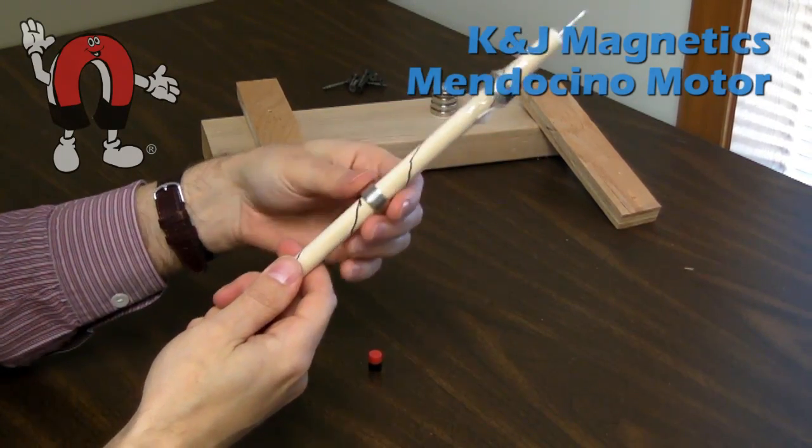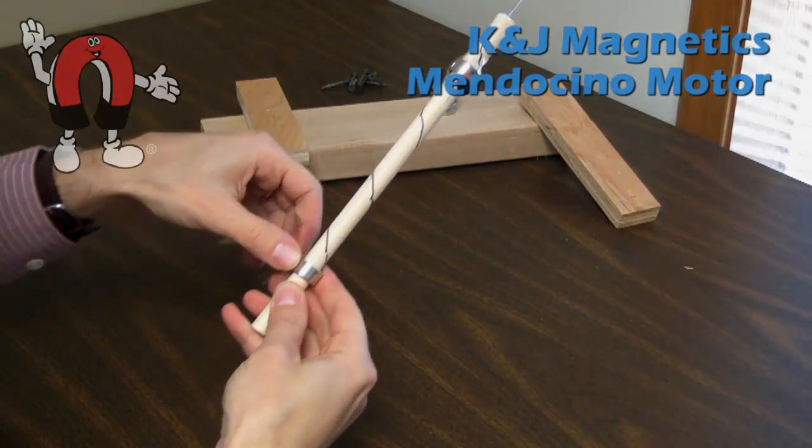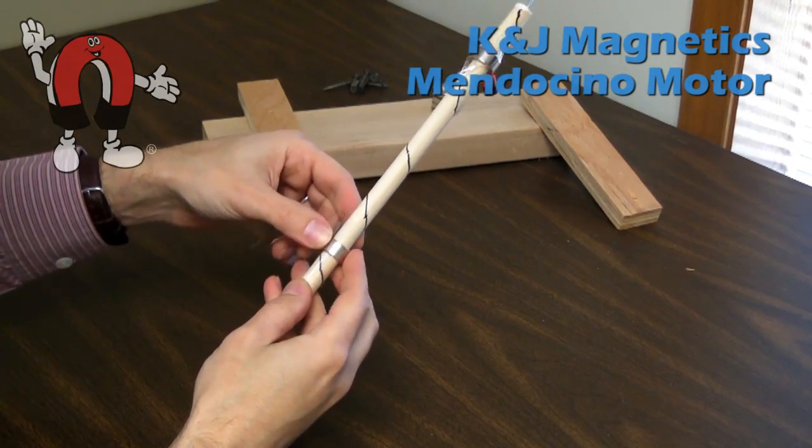You can tell that it's oriented the same way because it's attracted to the other magnet. And then we tape it again in the same way.